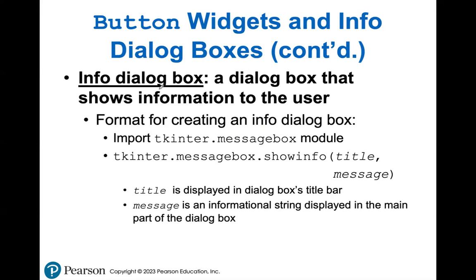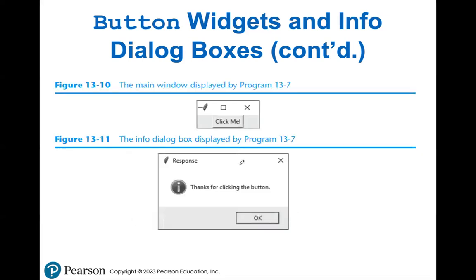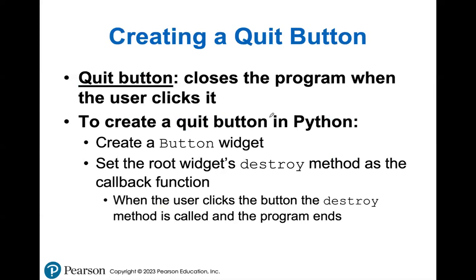An info dialog box is something that you are displaying in front of the user — it displays some sort of message to them. You have to specify the title of your dialog box at the very top, and then specify which message you want to show the user. For example, if they type their password wrong, you can display a dialog box saying 'your password is incorrect, please retype your password.' If the person clicks the 'click me' button, it's going to display a dialog box saying 'thanks for clicking the button.' A quit button will simply allow your user to quit the program as a whole.